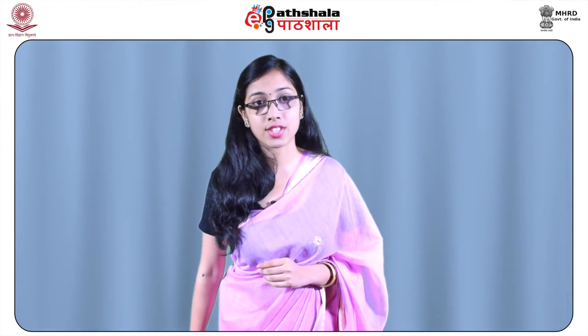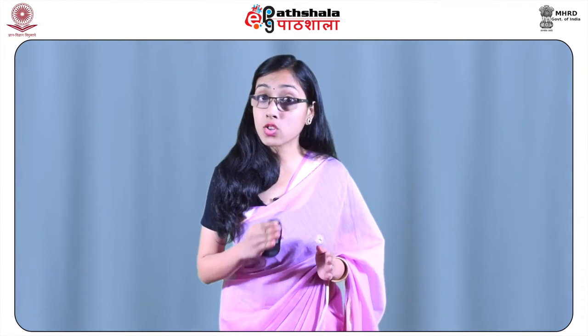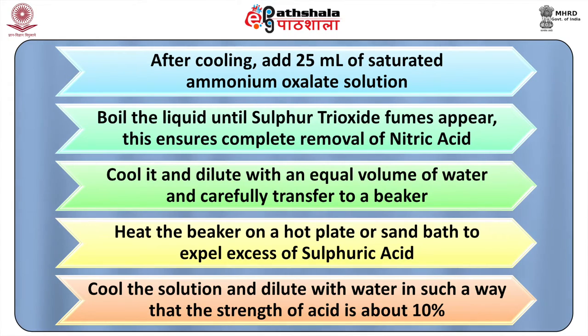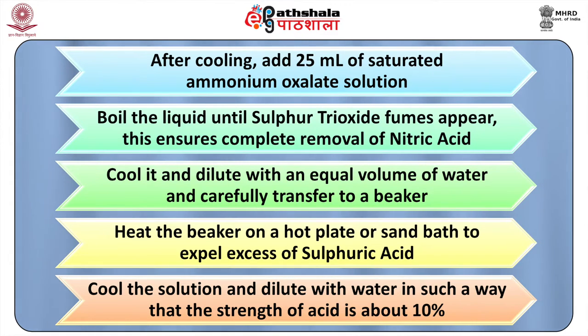Heating is continued until all the organic matter is destroyed and the liquid becomes clear and colourless or straw-coloured. To check if oxidation is complete, the flask is heated without adding any nitric acid — if any unburnt organic matter remains, the liquid begins to darken; if digestion is complete, no darkening takes place and white fumes of sulphur trioxide are given off. In the former case, addition of nitric acid and heating are continued till the organic matter is completely oxidized. Heating is continued for 15 more minutes to expel the nitric acid, then after cooling, 25 mL of saturated ammonium oxalate solution is added. The liquid is boiled until sulphur trioxide fumes appear, ensuring complete removal of nitric acid, then cooled, diluted with an equal volume of water, and carefully transferred to a beaker.